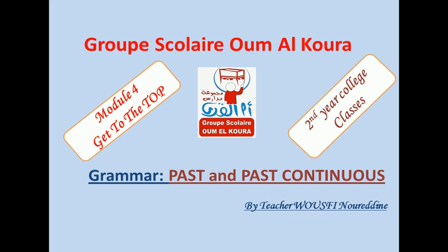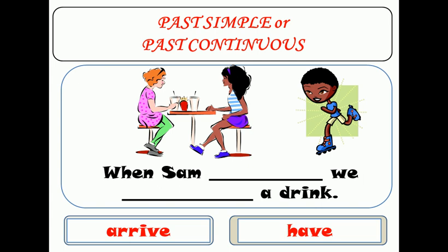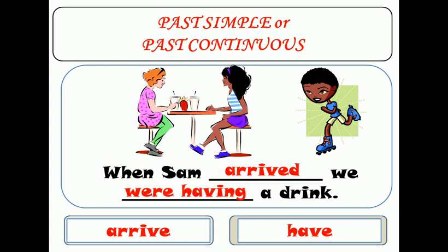Hello everyone. We are going to have a new lesson which is the past simple and the past continuous. Look at this sentence — we see two sentences and two actions at the same time, but one is short and one is long. As you can see here, when Sam arrived, we were having a drink. The two girls are sitting and having a drink.